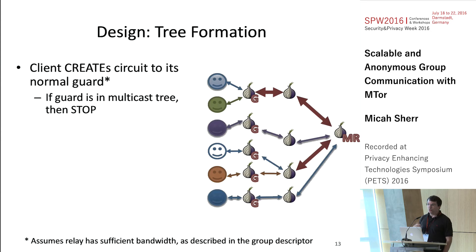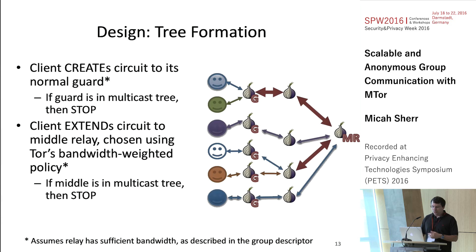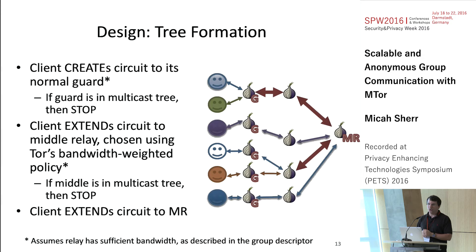The tree is formed by having each client create circuits to its normal guard — we're not changing how that works. A key difference is: if the guard is already in the multicast tree, you stop. If not, you extend the circuit to a middle relay, chosen using Tor's default relay selection strategy except for the minimum bandwidth requirement. If that relay is in the multicast tree, you stop; otherwise you extend, finally, to the multicast route.